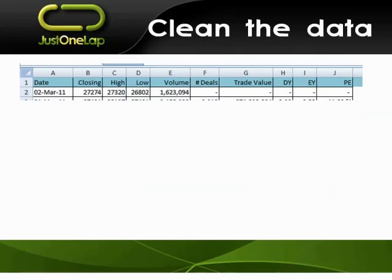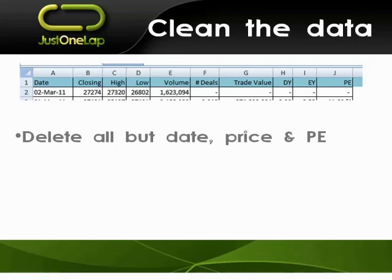Much of that I'm not needing at all. So I delete all but date, price, and PE — those are the ones I want. One quick point: sometimes the PE in Excel has a percentage next to it, and you can't actually use it because Excel looks at that as text, not as a number. In which case, I take the earnings yield and divide it into 100, and that will give me a PE as an earnings number.